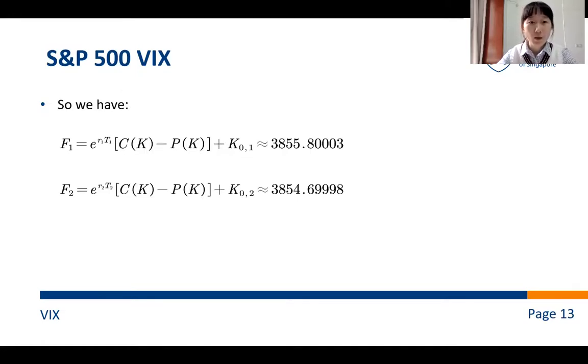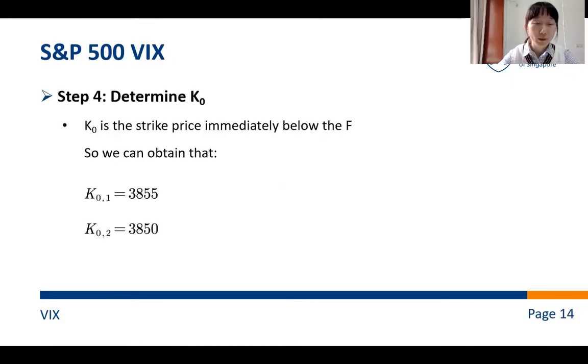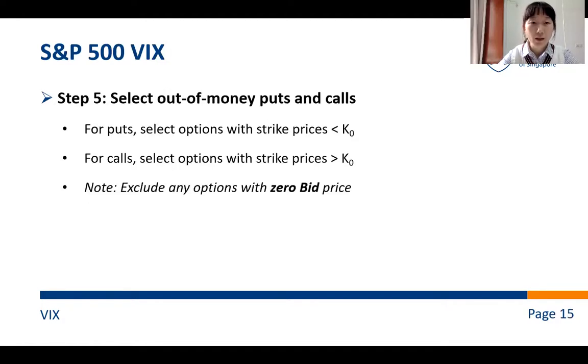By plugging in all the numbers which we have obtained in previous slides, we get F1 and F2 for near term and next term separately. Next, we determine the K0. Recall the definition of K0. It is the immediate strike below F. So, the two chosen K0 are shown here. Now, let's move to an important part. In this step, we should pick out the out-of-money options. That is, the puts whose strike is smaller than K0 and calls whose strike is larger than K0. In addition, we need to drop all the options with no bids.